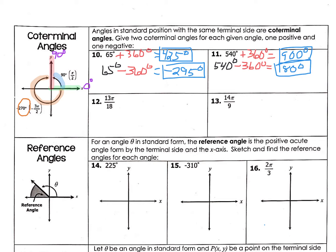I want to actually subtract from the 180. Since I already took 540 and subtracted 360 and got a positive, now I want to continue with the 180. So from the 180 that we just got, I'm going to subtract another revolution, and this time it should give me a negative value. And sure enough it does — we get negative 180 degrees.